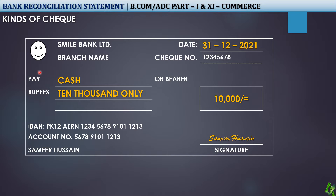Here we have a 'Pay' field — you can write cash, self, a name, a person, or a company, or you can leave it blank. Rupees — you can write the amount in words, like 10,000. Here is the amount box where you write the figure in numbers. Here you have some numbers like your bank account number and check number details, a name, and a signature. What I have written in yellow and white color is already printed on your check.